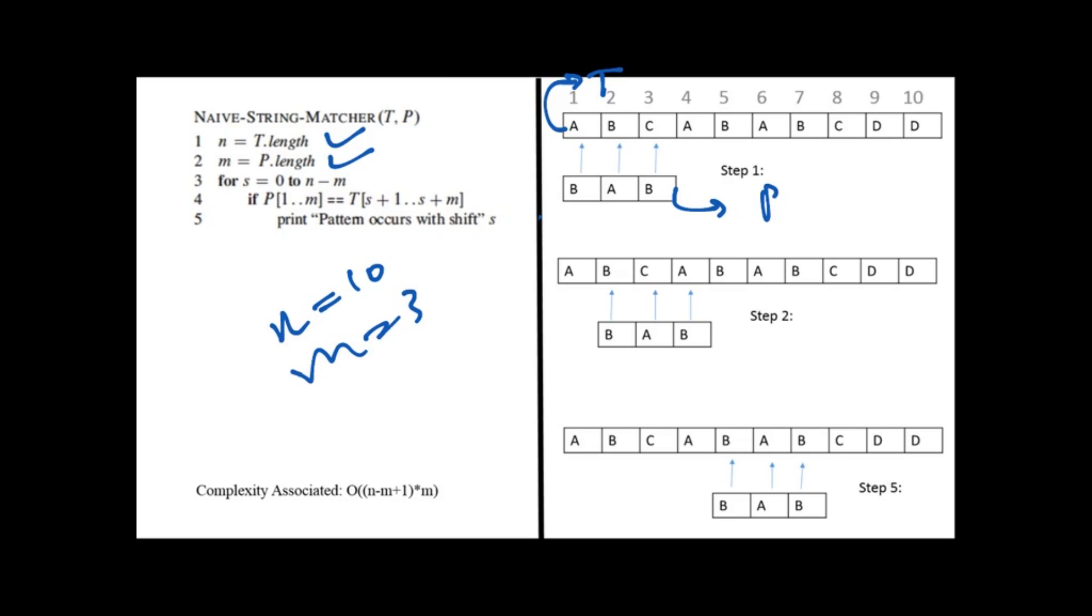Now we will start matching. Here the pattern we have is BAB. For the matching purpose there is something very special I need to tell you about. It is S. S is basically the shift. Shift also acts as a flag of telling us if we have found the pattern or not, and shift also acts as a counter. So it has two works: counter and flag.